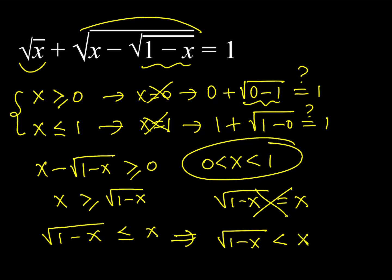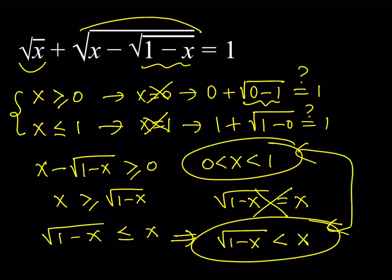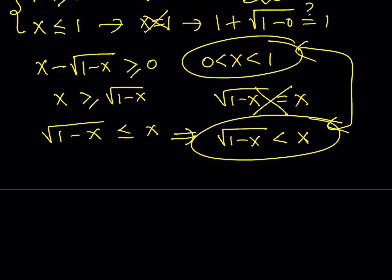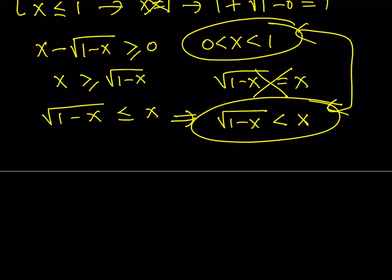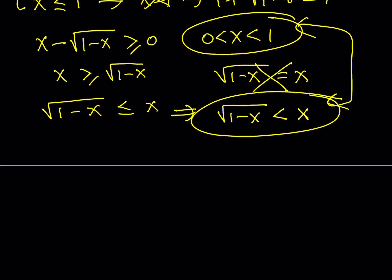If you put this all together, we can write a chain of inequalities. We start with 0, and 0 is less than square root of 1 minus x, because the radical is always greater than or equal to 0, but it can't equal 0 since x cannot equal 1. We also know that square root of 1 minus x is less than x, and x is less than 1. So we can write the following chain: 0 < √(1−x) < x < 1.